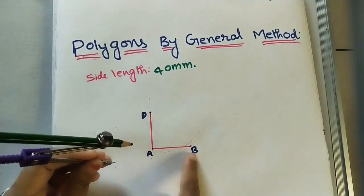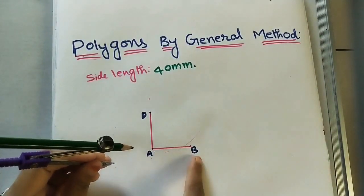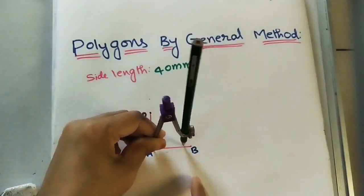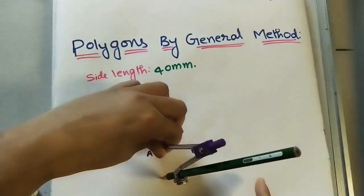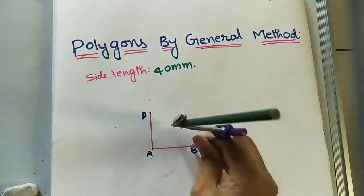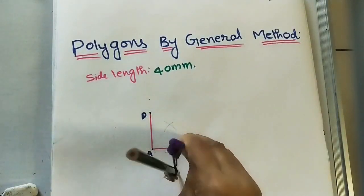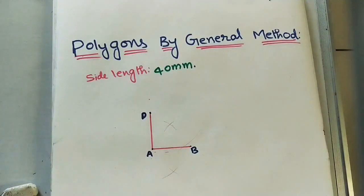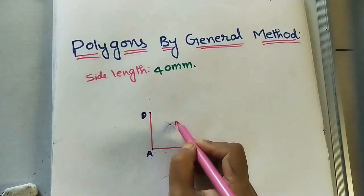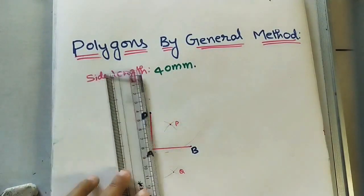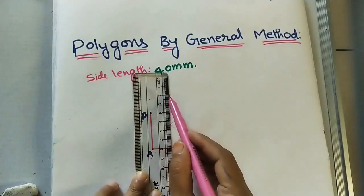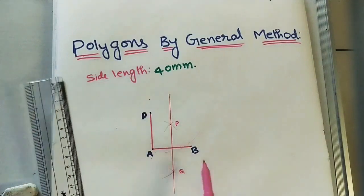Now I will bisect AB into two equal halves. Using a compass, take more than half of AB, and with A as center draw an arc on both sides. With the same radius and B as center, cut those arcs. The intersection points are P and Q — join P and Q to get a perpendicular bisector line. The entire diagram should be drawn with pencil only.